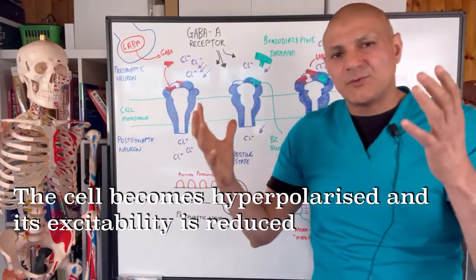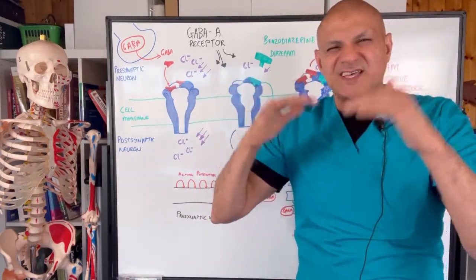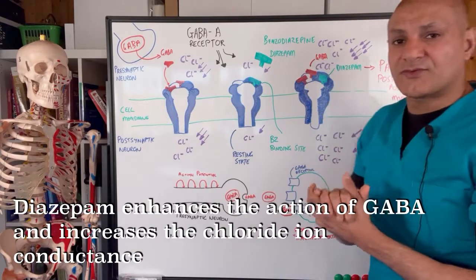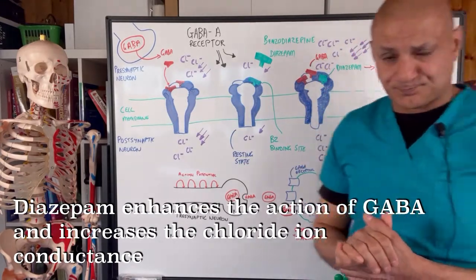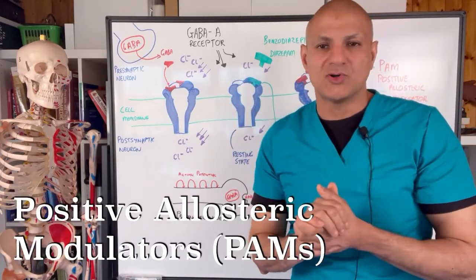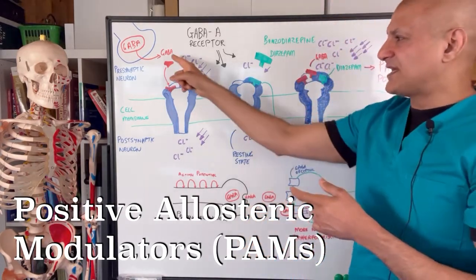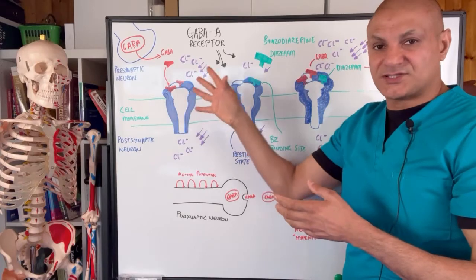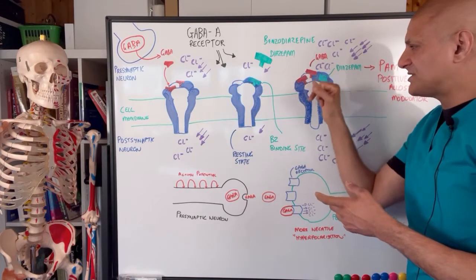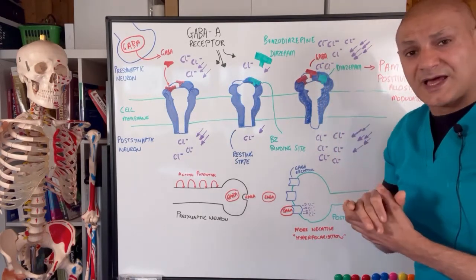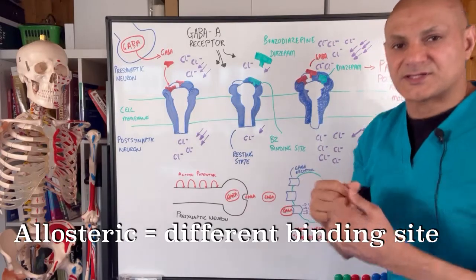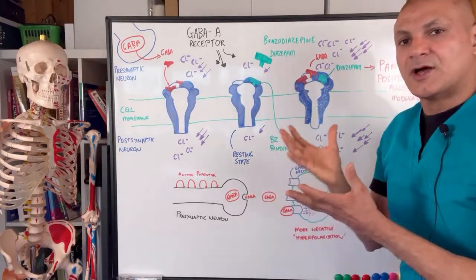When we take diazepam, that's what gives us this calming, sedative-like effect. We've basically enhanced the actions of GABA and increased the conduction of the chloride ions. The benzodiazepines are also known as a positive allosteric modulator, meaning they potentiate the actions of GABA. GABA's natural action is to increase the conduction of chloride ions, and when diazepam binds to its receptor, it increases that natural action — but it doesn't bind to the same site as GABA. It binds to a different, allosteric site.